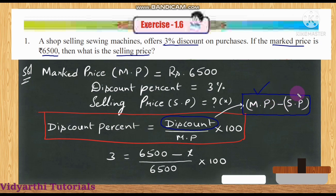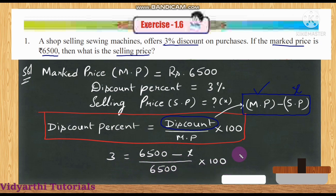Market price is known, and we'll call selling price x. So: discount = 6500 minus x, and market price is 6500. Discount percentage is 3%.